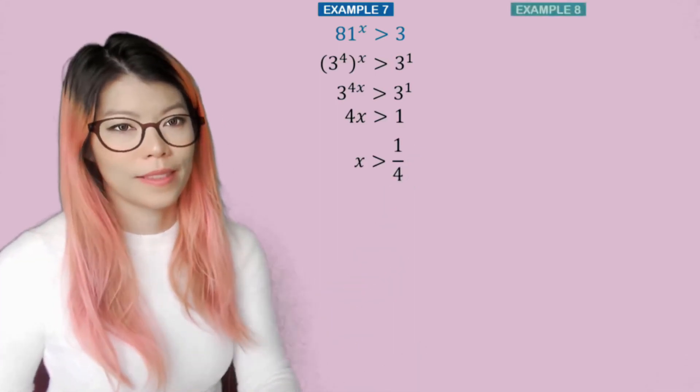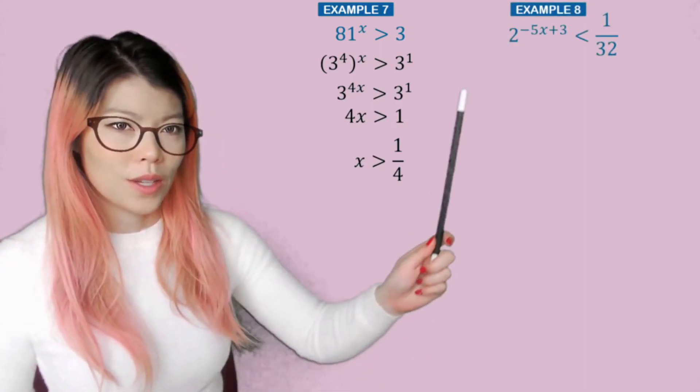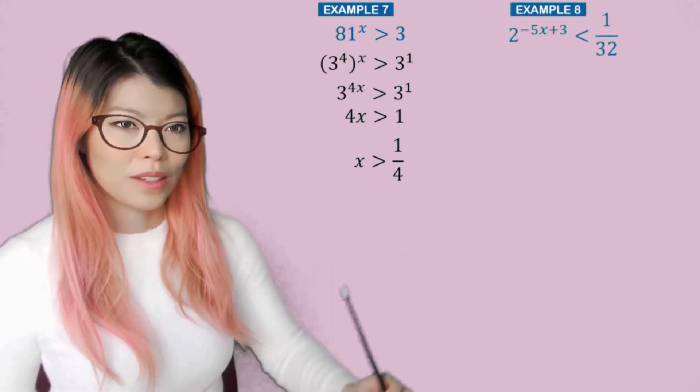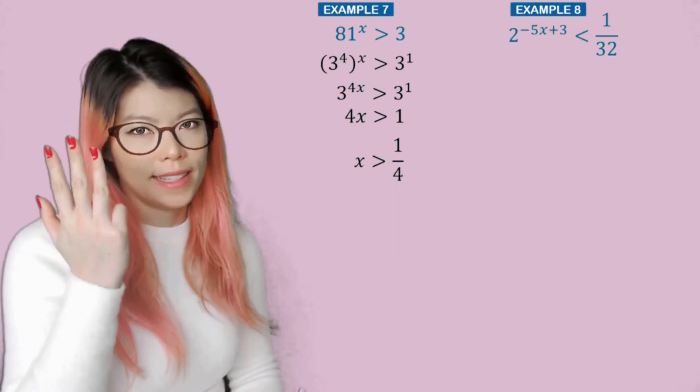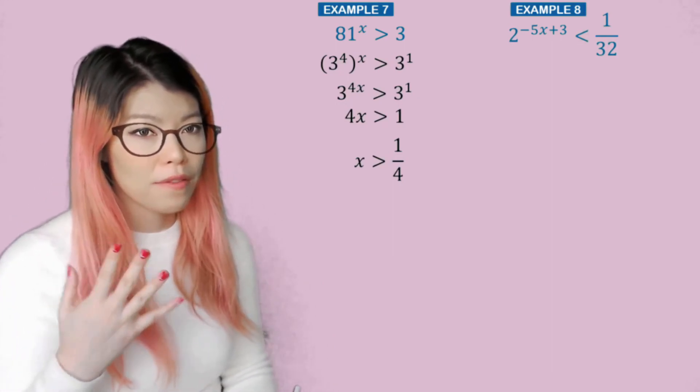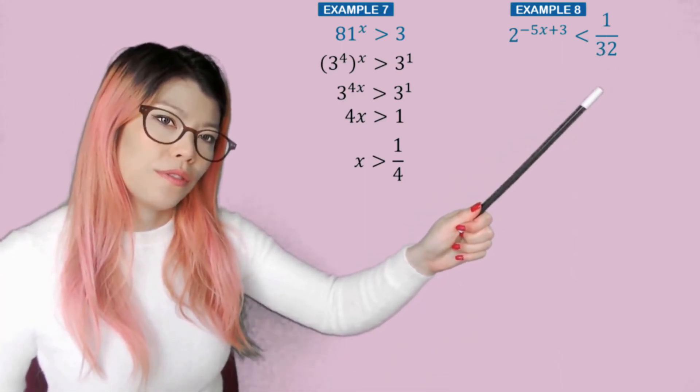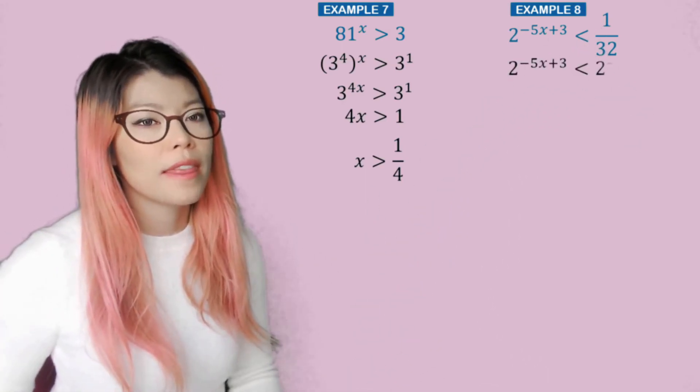Example 8. So when we have that, it looks a little bit scary, but we can do this. The 32 can be written as 2, 4, 8, 16, 32. So 2 to the 5. And because it's 1 over 2 to the 5, when we bring it up, it becomes 2 to the negative 5.